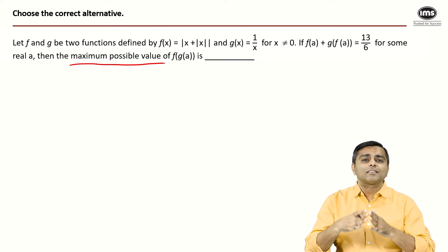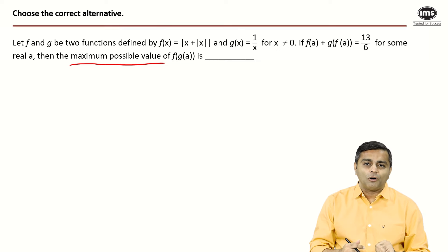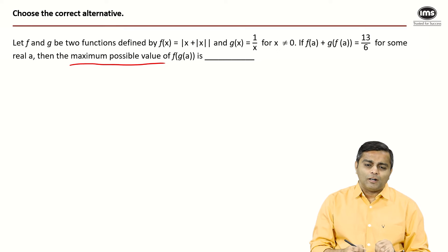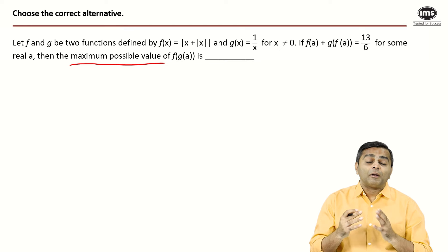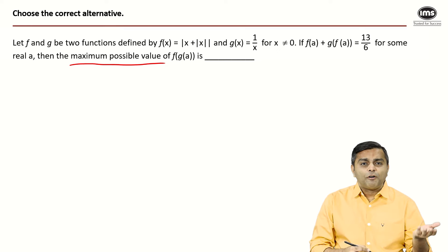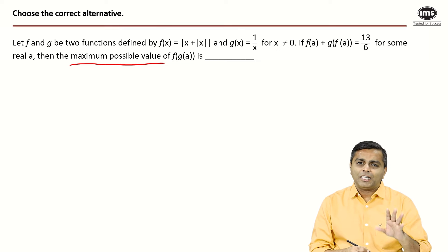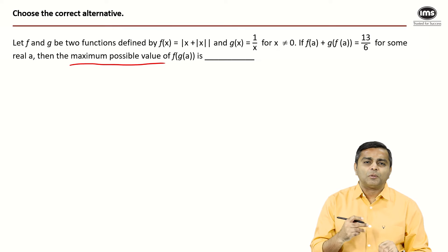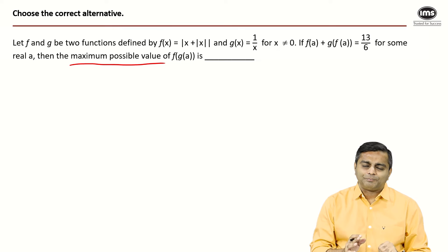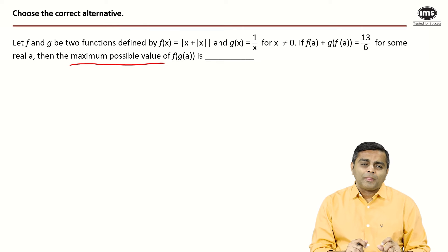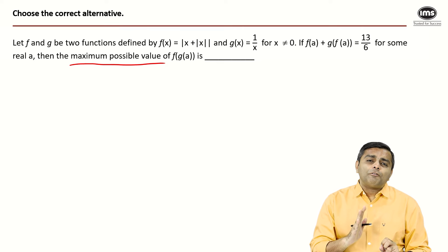We're given that f(a) + g(f(a)) = 13/6, and we need to find the maximum possible value of f(g(a)). Let's first decode what is given. f(x) = |x + |x||, and g(x) = 1/x.